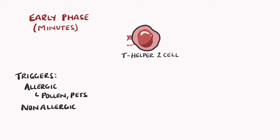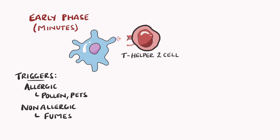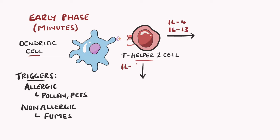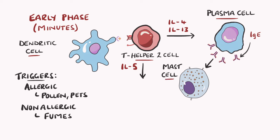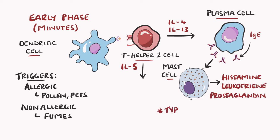There are also non-allergic triggers, such as smoking and even perfumes. The trigger is taken up by an antigen-presenting cell, typically a dendritic cell, and shown to the T-helper cell. In asthmatic patients, these Th2 cells produce cytokines in response, including IL-4, IL-5, and IL-13. IL-4 and IL-13 cause plasma cells to release IgE, and IgE will then activate mast cells to release granules in a process known as degranulation. These granules include histamine, leukotriene, and prostaglandins. In immunology, this is called a type 1 hypersensitivity reaction.